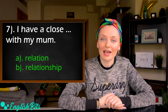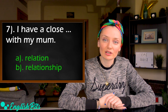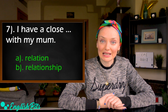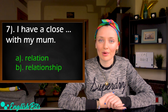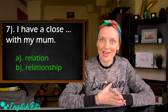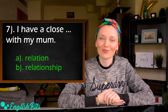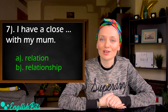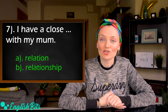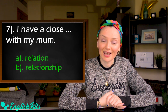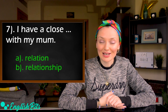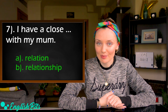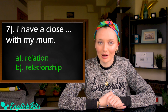Number seven: I have a close — A) relation, or B) relationship — with my mom. Choose A or B.